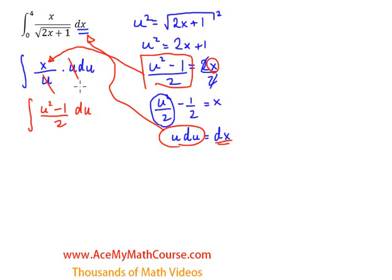And now we have to figure out the new limits. They can't stay 0 and 4 because those were in terms of x. So we know that basically our u was the square root of 2x plus 1. So when x is 0...